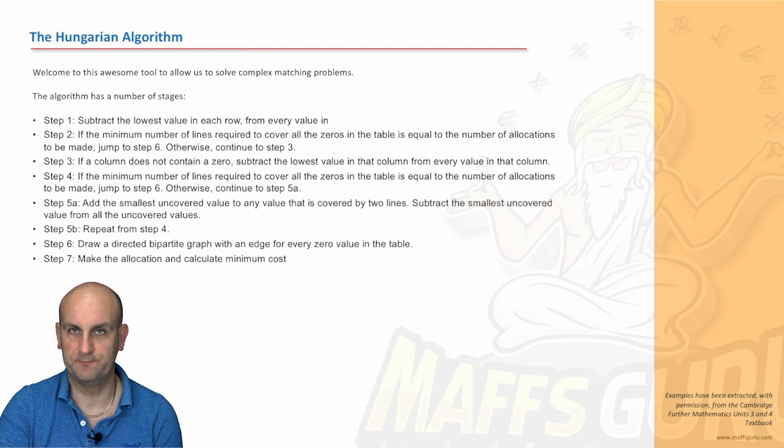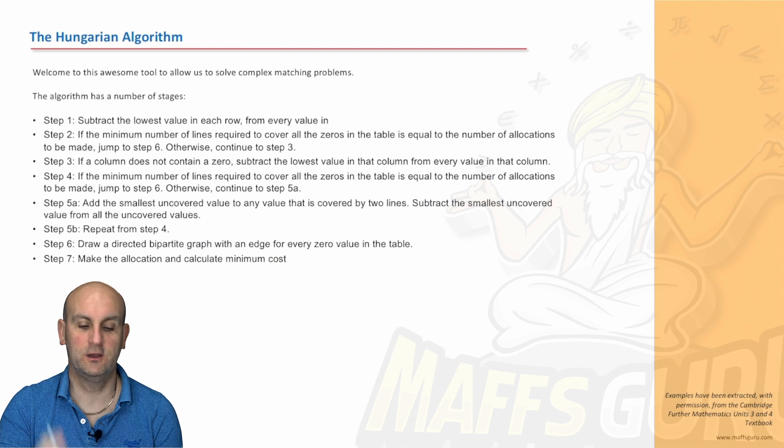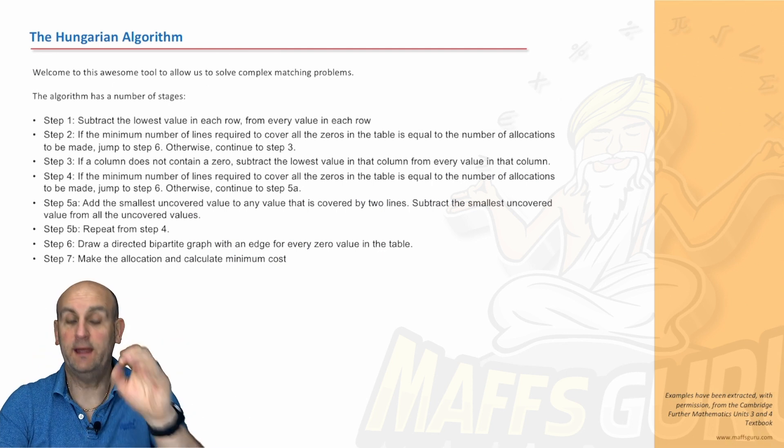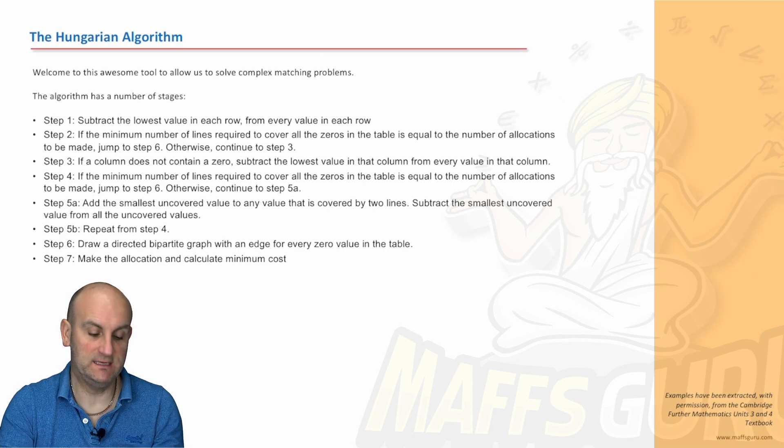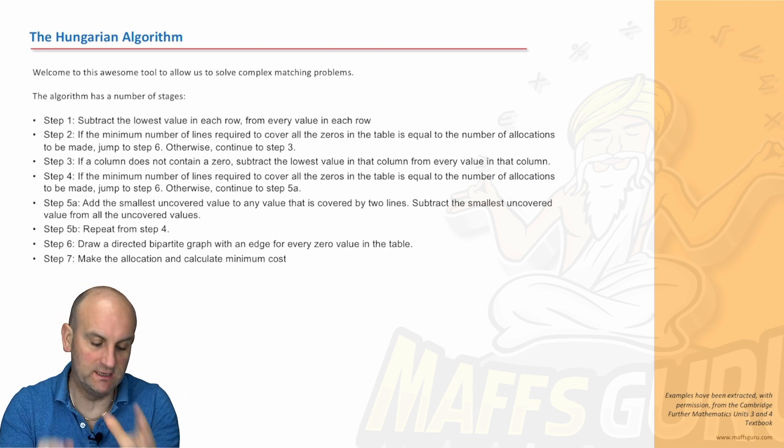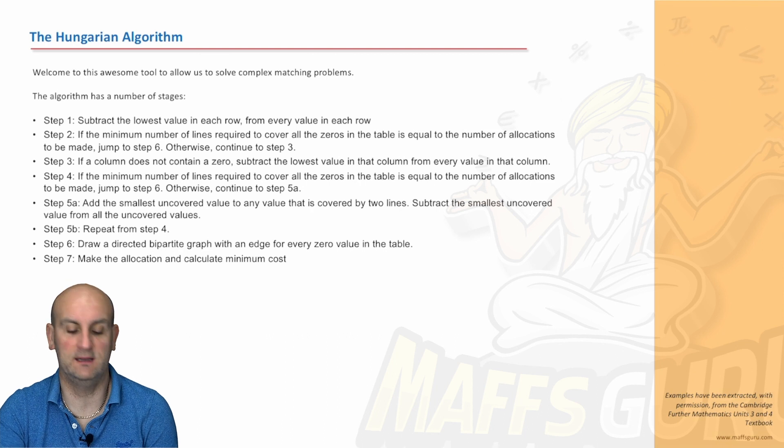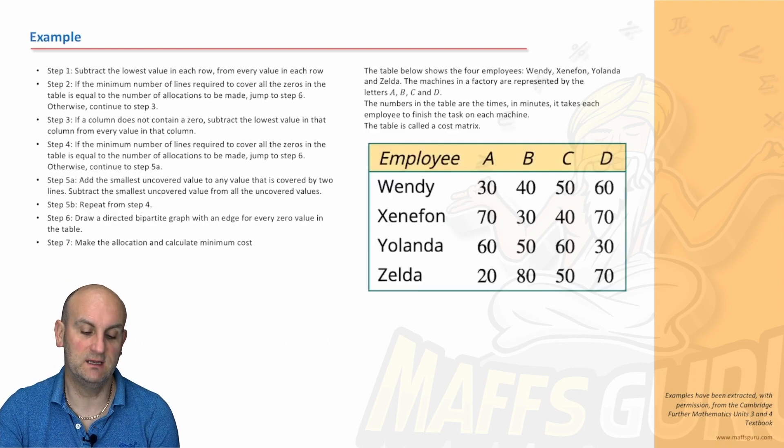Here is the Hungarian algorithm. And it is just a process of steps. And my advice to you is you copy it into your summary book and you follow it through. The Hungarian algorithm has a number of stages. And these are followed religiously step by step. So subtract the lowest value in each row from every value in each row. If the minimum number of lines required to cover all the zeros in the table is equal to the number of allocations to be made jump to step six. Otherwise continue step three. I can continue reading these. Let's actually do an example.